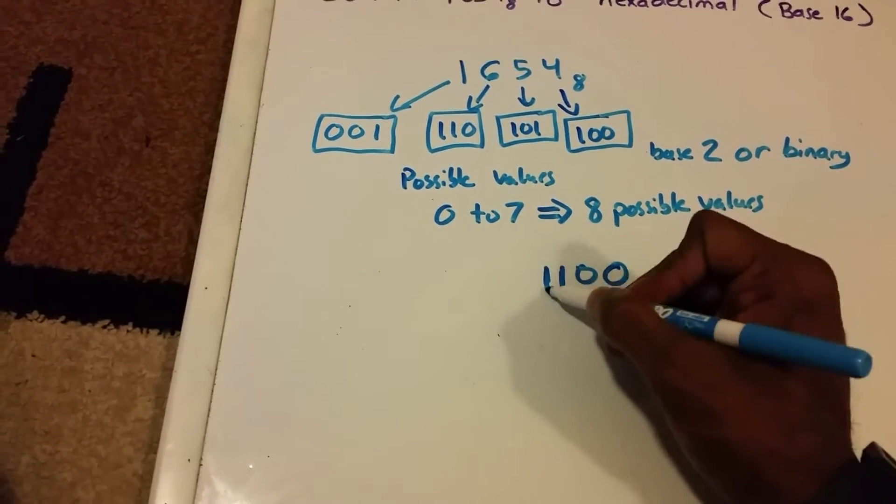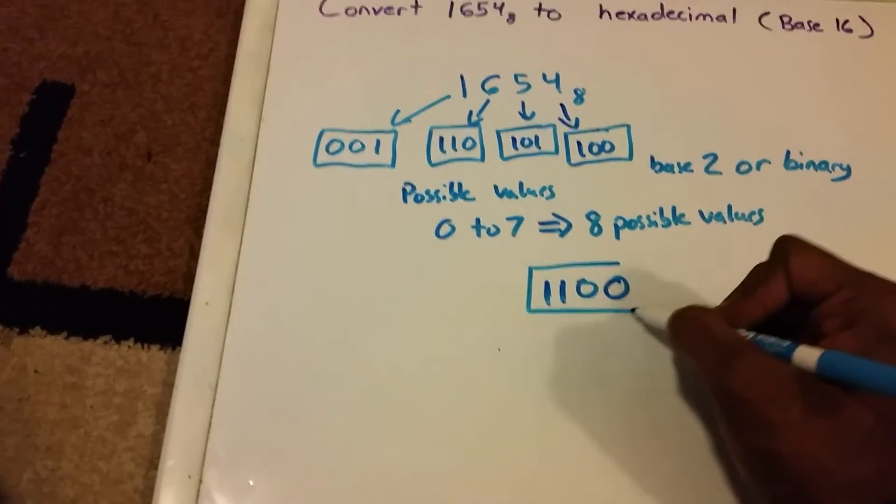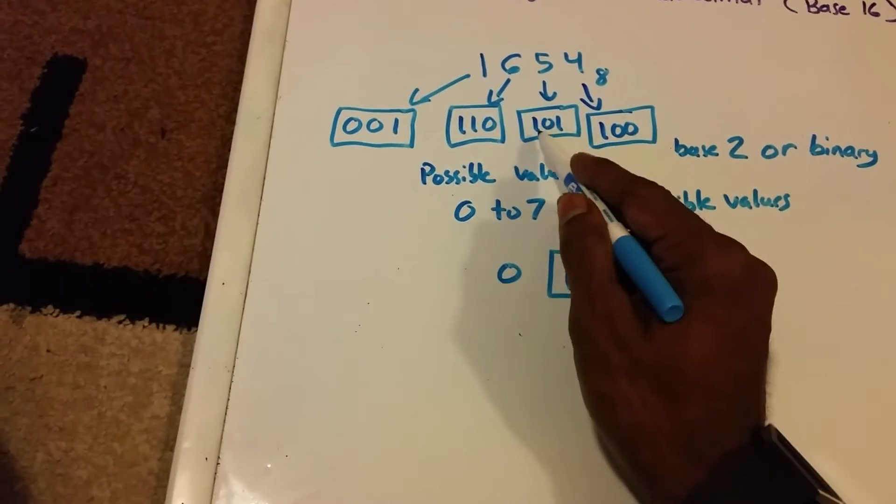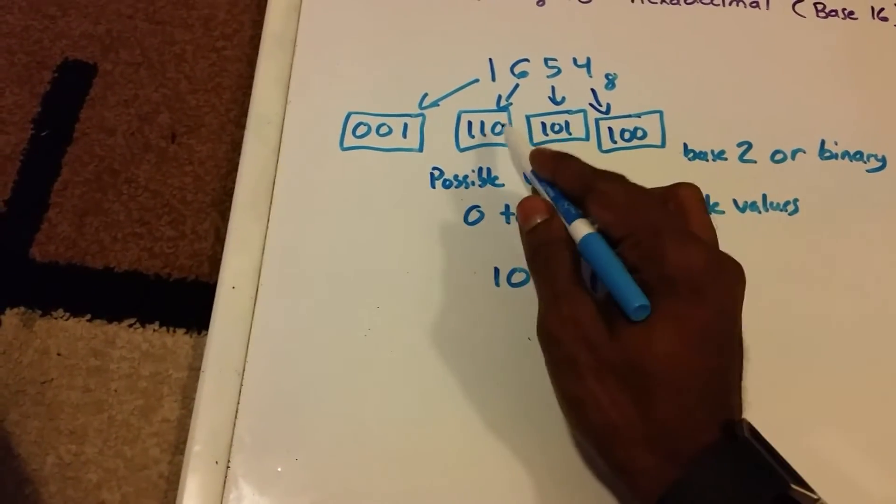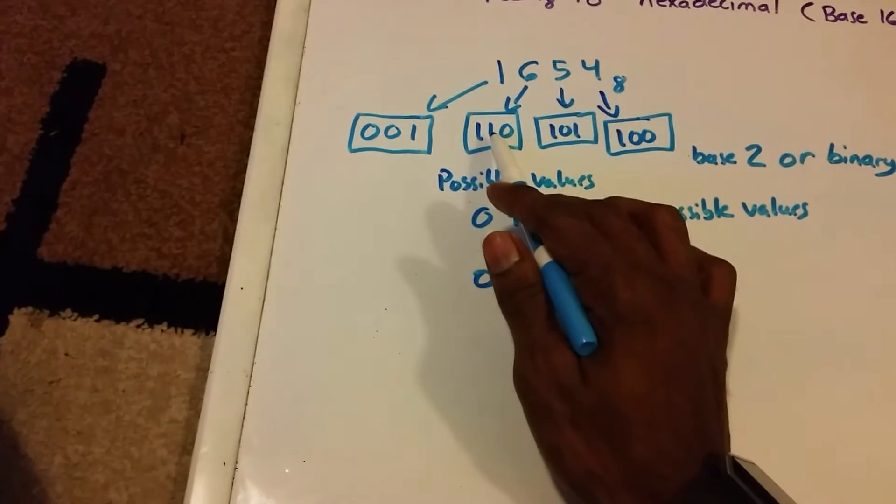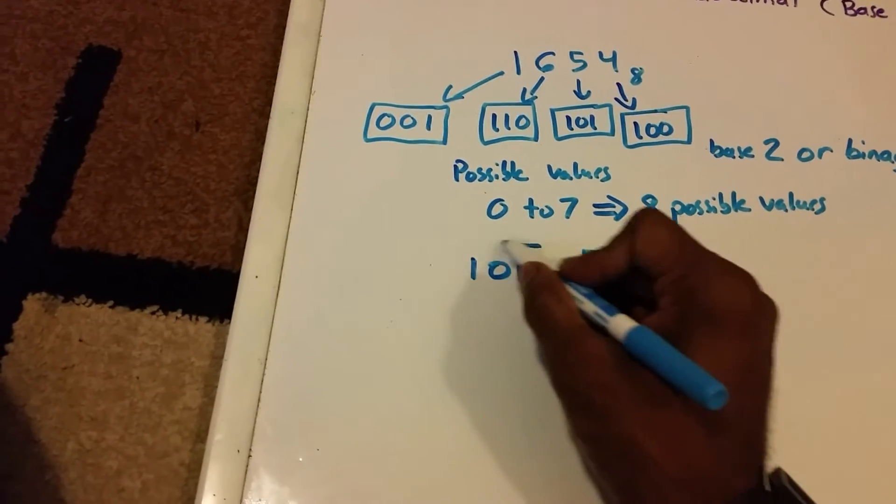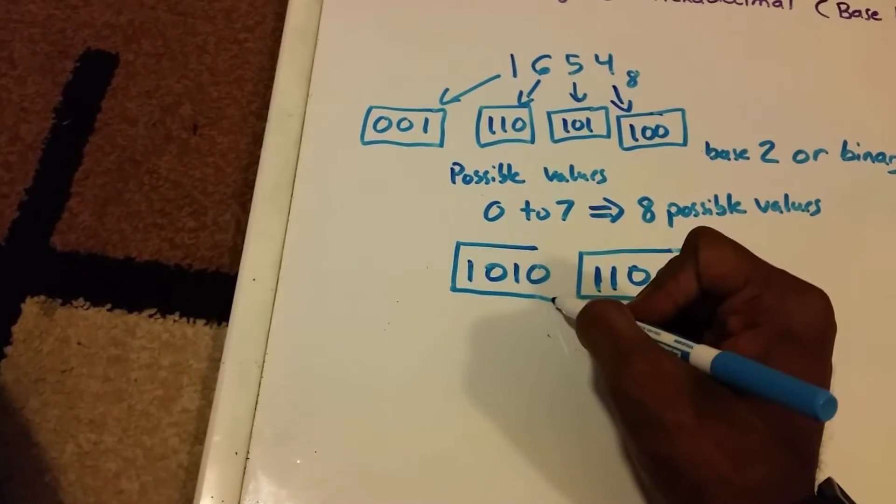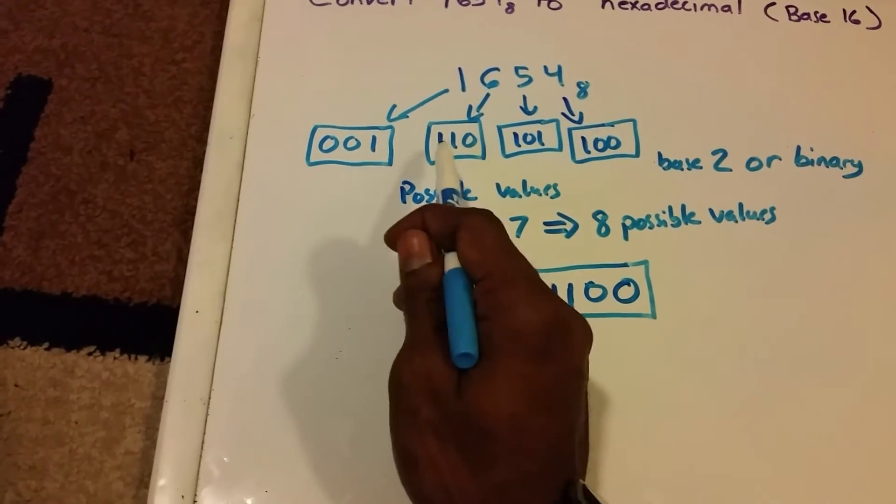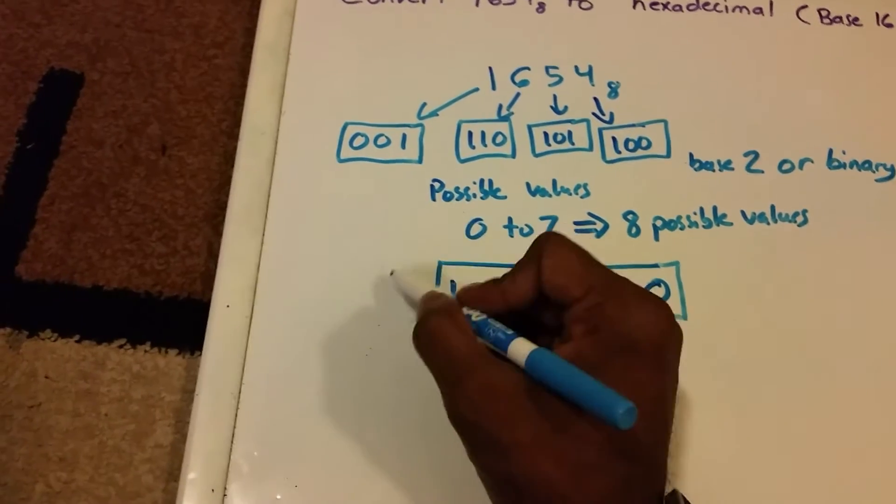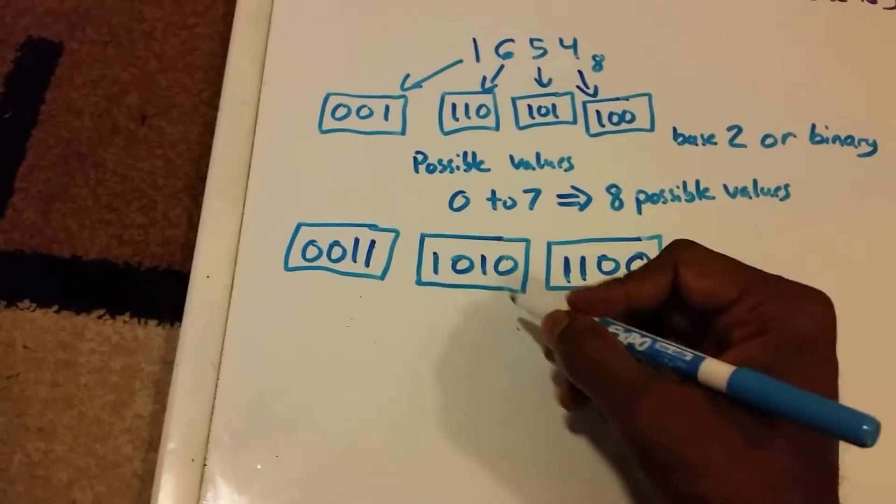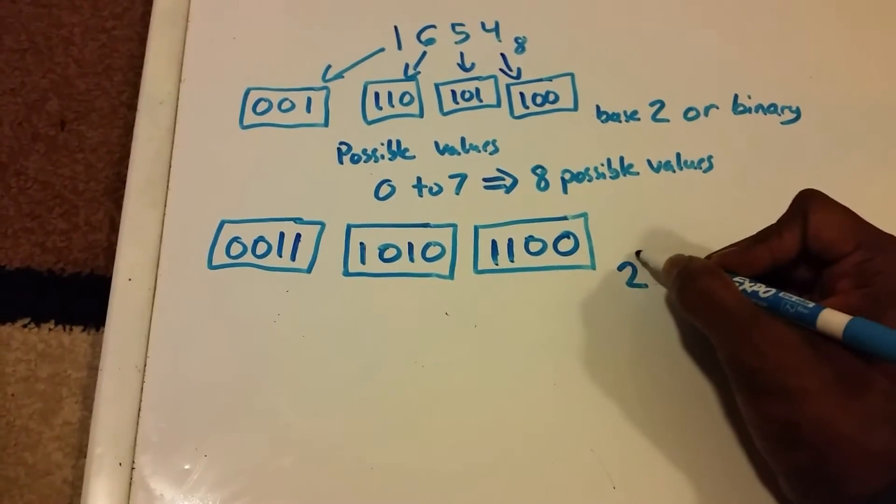Next, we take the 0 from up there, the 1 there, the 0 here, and then the 1 here. That's our second grouping of 4 bits. And then the last one is we take this 1 here, that one there, and then the two zeros to get 1100. This is still base 2.